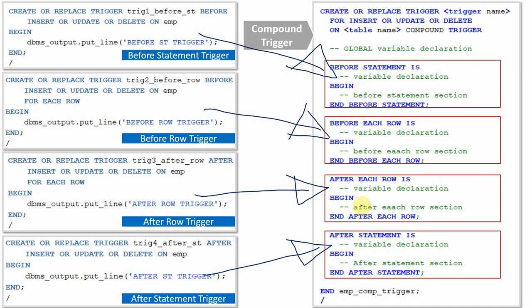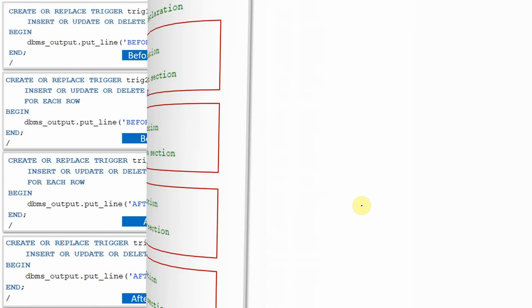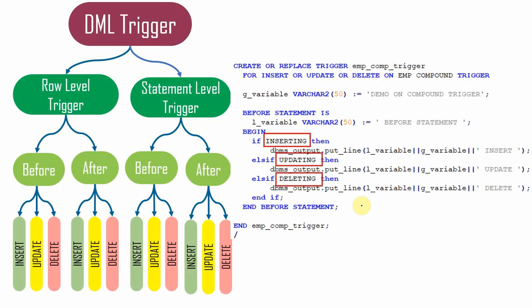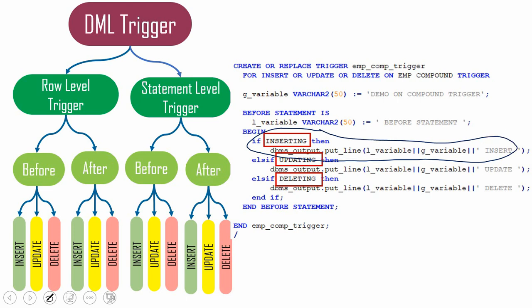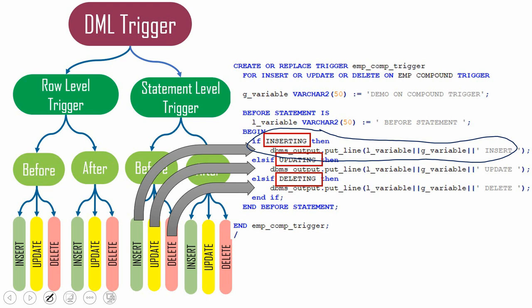In this case, the sections execute for all DML operations — insert, update, and delete. We can also implement sections for a specific operation using three functions: INSERTING, UPDATING, and DELETING. These functions return a Boolean value based on the DML operation being performed. For example, if you want to implement only the before statement-level insert trigger, use the INSERTING function and write the logic within an IF clause. Similarly, use UPDATING to implement update trigger logic and DELETING for delete trigger functionality.